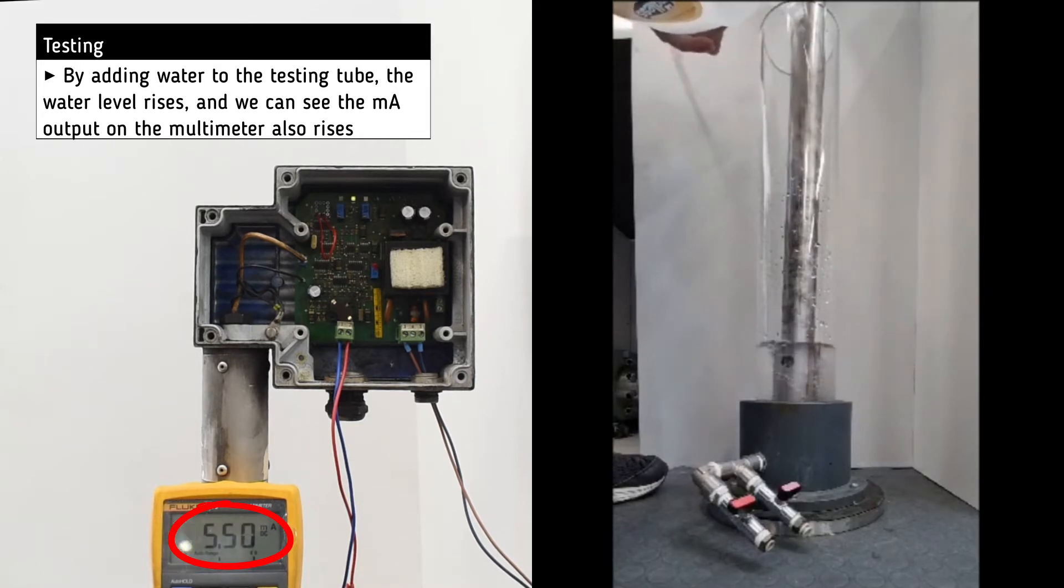we add water and as the water level rises, we can see the milliamp output also rises as shown on the multimeter screen.